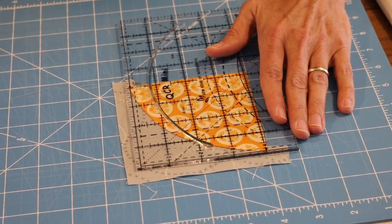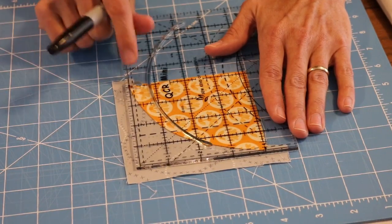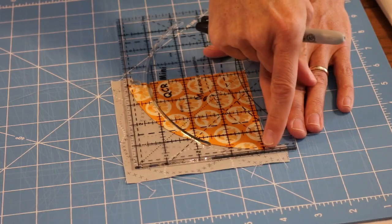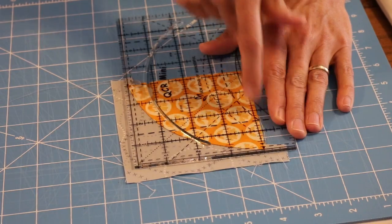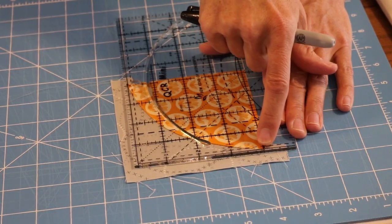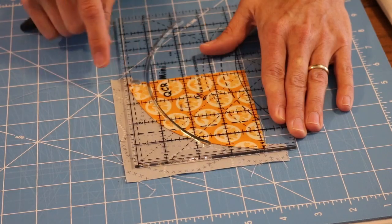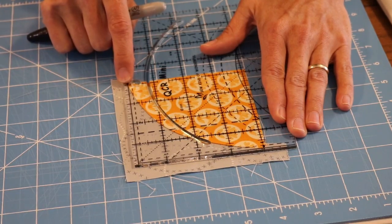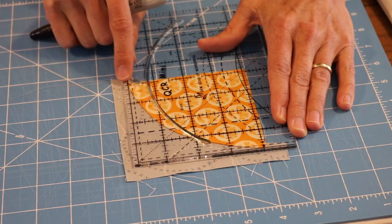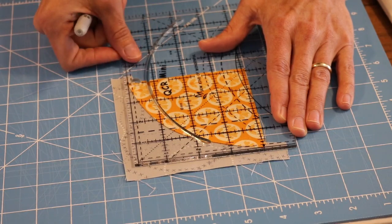And I have taken a Sharpie and I've made two little dots. One here on the four-inch vertical line an eighth of an inch in on the edge, and then one over here on the four-inch horizontal line an eighth of an inch in from the edge of the ruler.